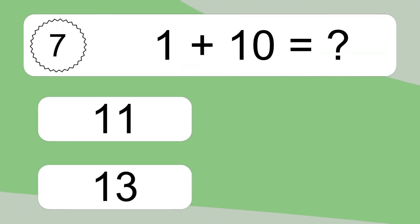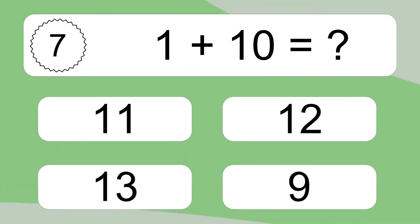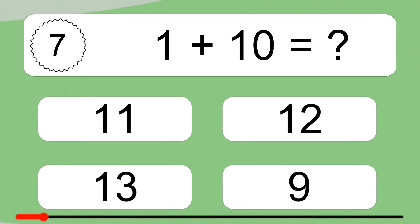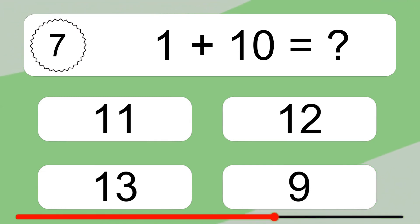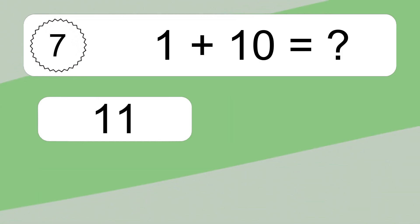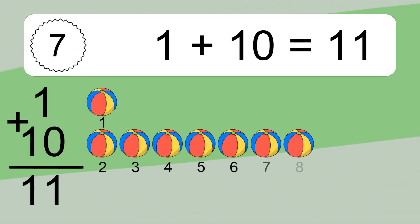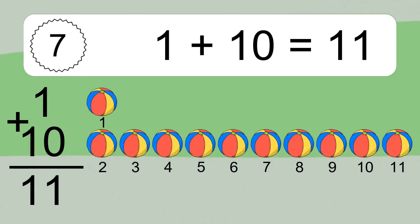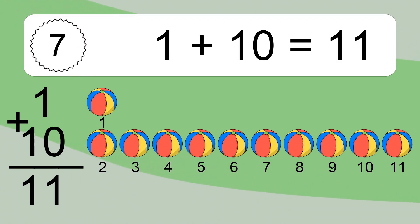1 plus 10 equals what? 1 plus 10 equals 11. Let's count it. 1, 2, 3, 4, 5, 6, 7, 8, 9, 10, 11.